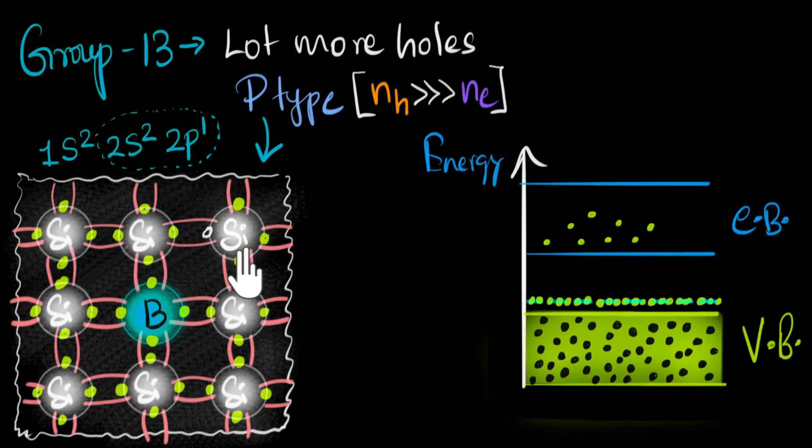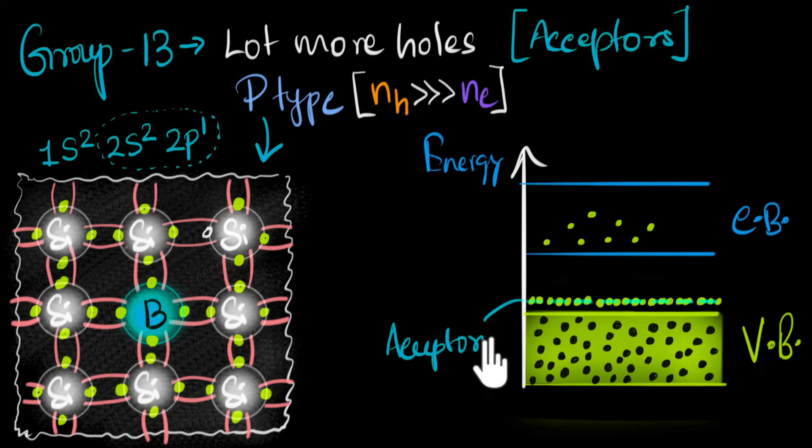We have a couple of technical names when it comes to adding impurities. The process of adding impurities is called doping. Since this boron accepted an electron, and that's how we got holes, we call this impurity an acceptor impurity. Group 13 are called acceptors. The energy level that they introduced, at which electrons were able to jump into, that energy level is called the acceptor level.